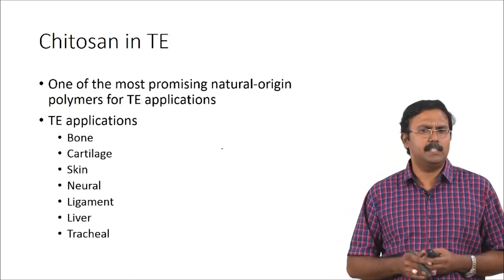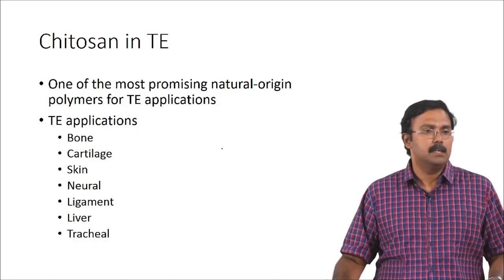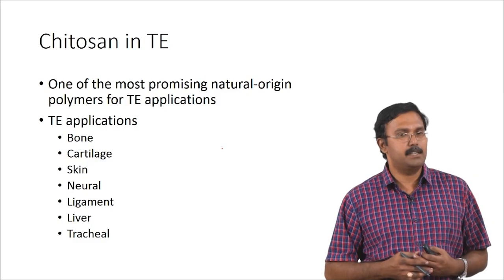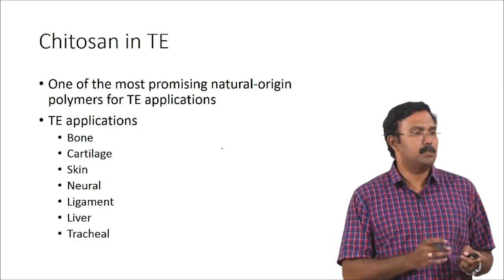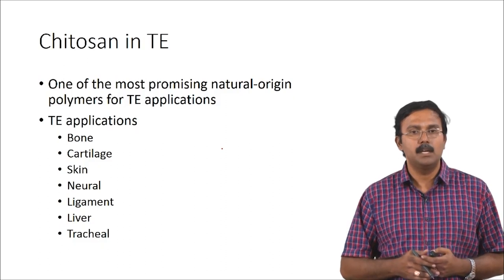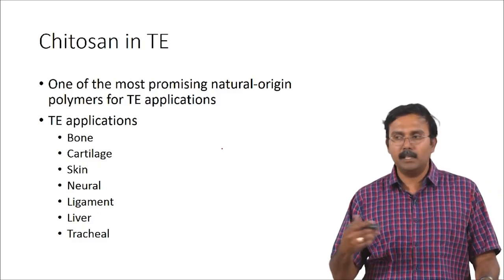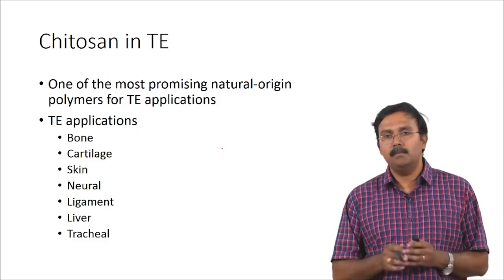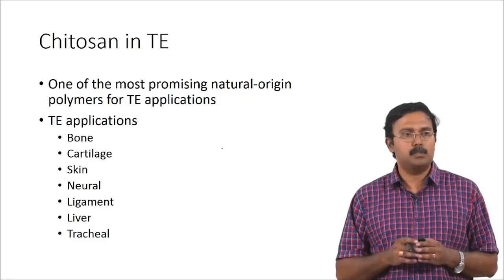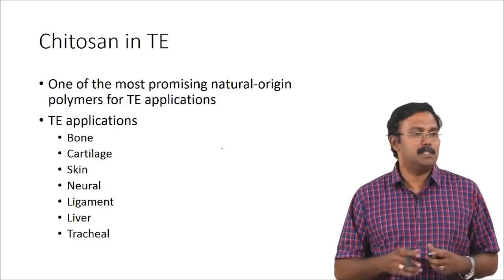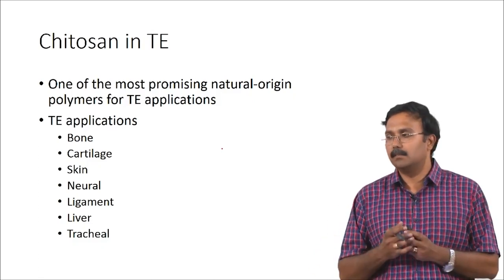Chitosan has been used in different tissue engineering applications and is identified as one of the most promising natural origin polymers for tissue engineering applications. For bone it is probably used along with some ceramics because using just chitosan alone is probably not good enough for the mechanical properties. But it has been used for a lot of soft tissue applications — again, blended with other materials as composites. All the materials we talk about are pure components, but current research almost always uses composites. You would almost never see just one material being used, because your ECM itself is not a single material — it is a mixture of things.